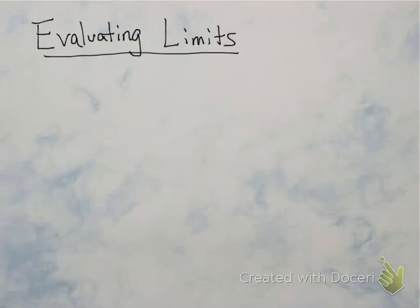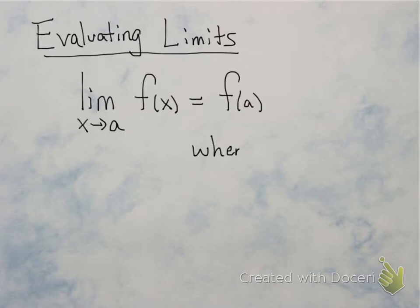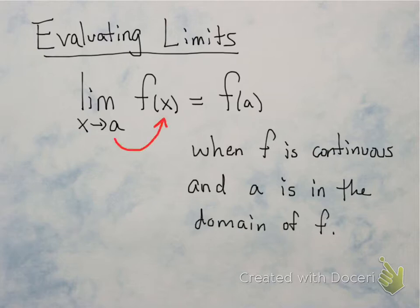We've looked a lot at evaluating limits this semester, so I think it's a good time to take a look at all of the things that we've done and review all of the tricks. The main thing we want to do when evaluating a limit — for example, the limit as x approaches a of f of x — is just take the number a and plug it in for x into the function. This only works when f is continuous and a is in the domain of f, but it's still something you should try every single time.